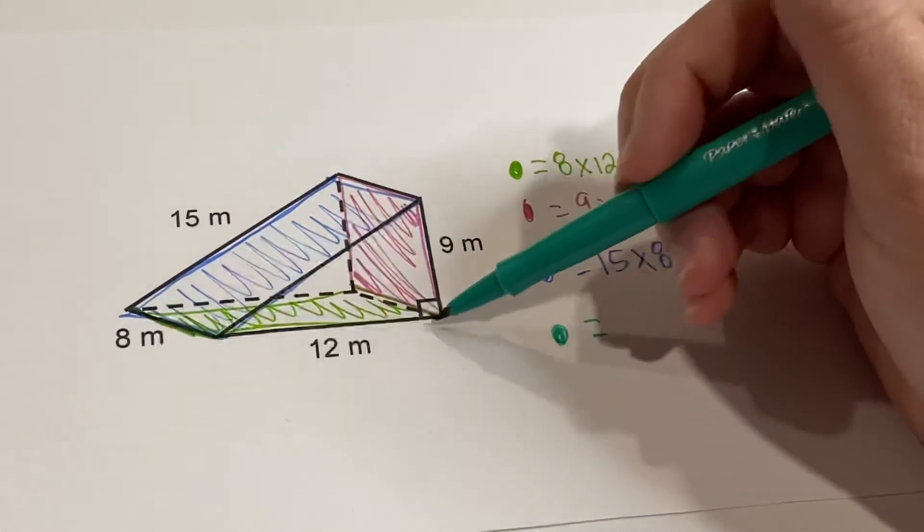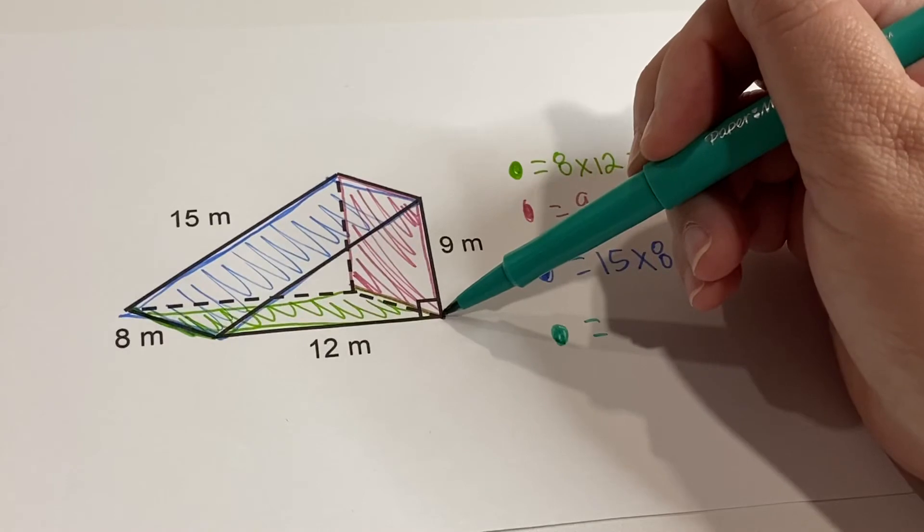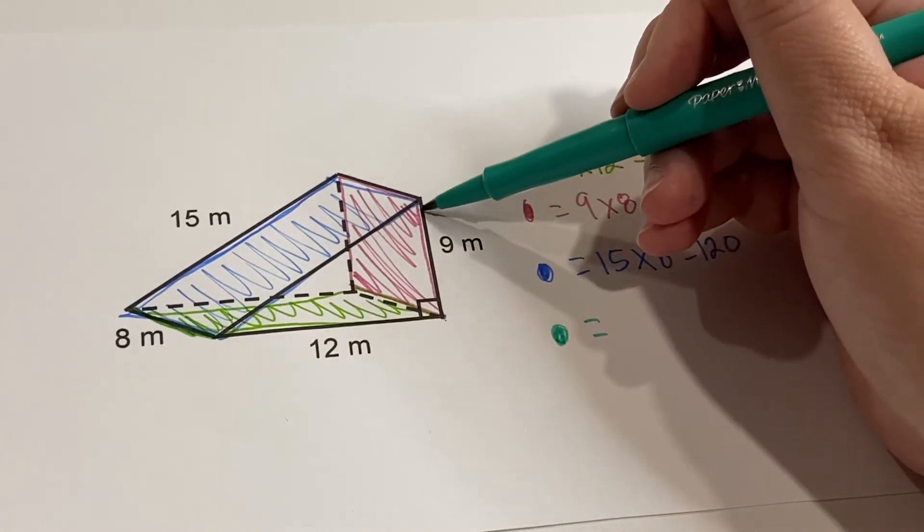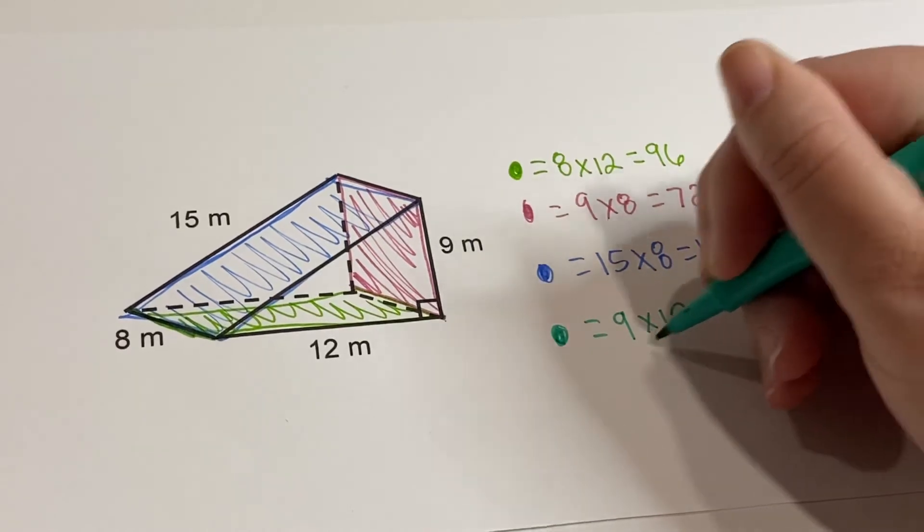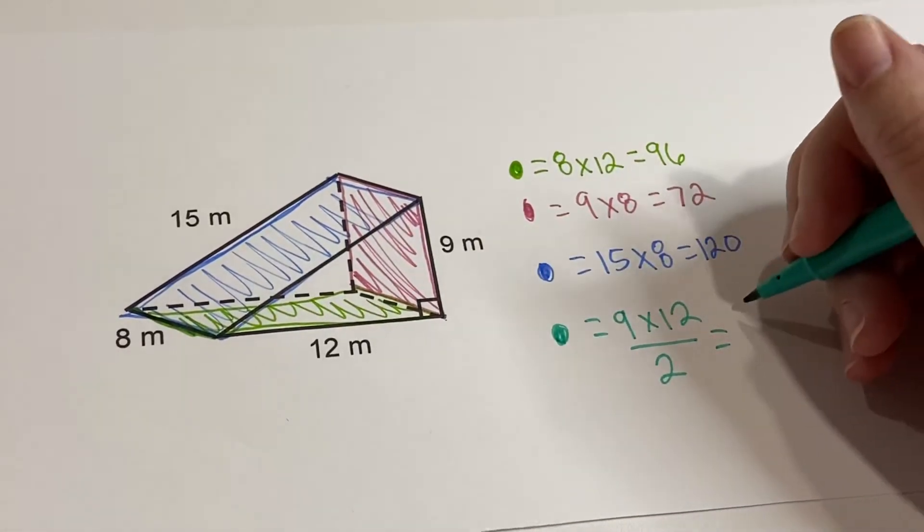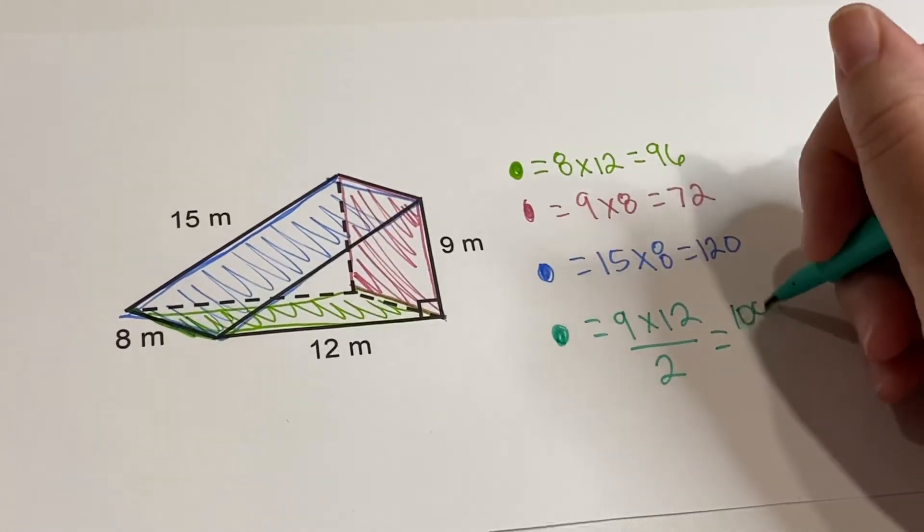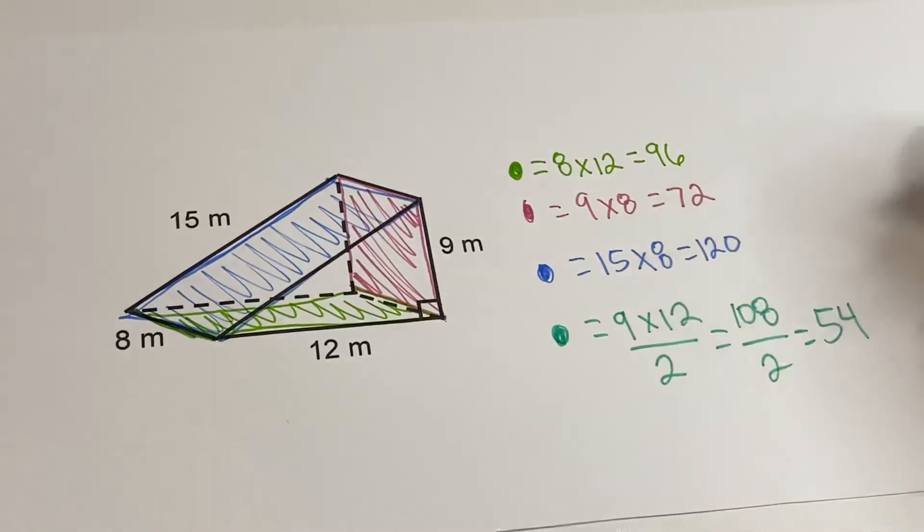We have our height and our base, so it's one-half base times height, right? So we're going to do 9 times 12 divided by 2, so we're going to get 108 divided by 2. So we know each triangle is 54.